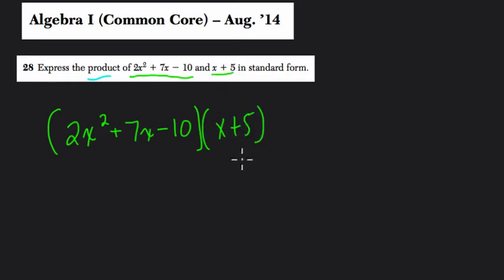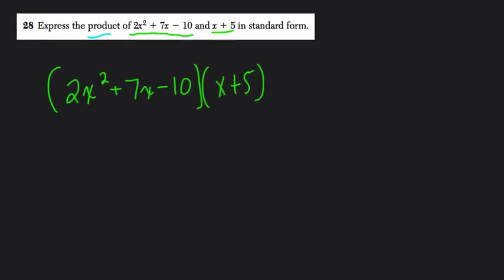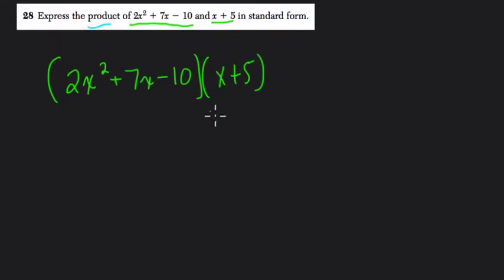It's a binomial of two terms. Here we need to distribute each of the three terms to x plus 5, or reverse - the binomial to the larger trinomial. Either way, the commutative property tells us we'll get the same answer. One thing times another, reversed in order, will lead to the same result.